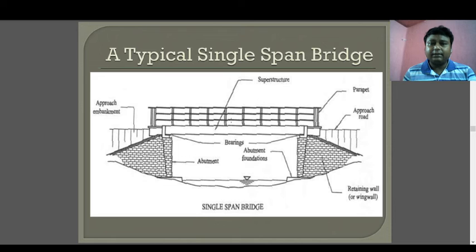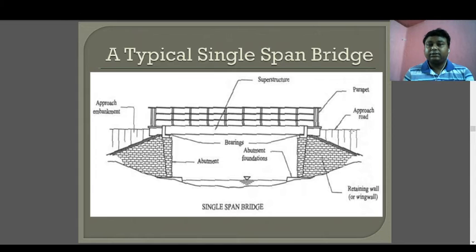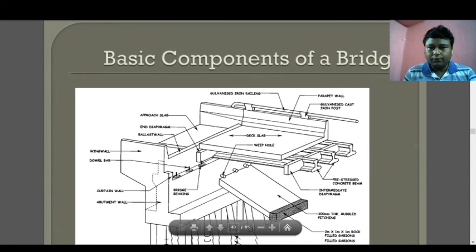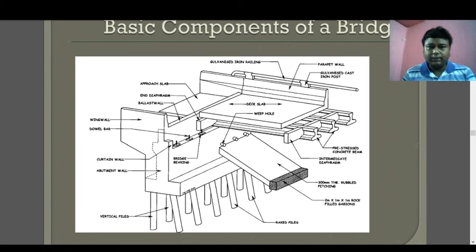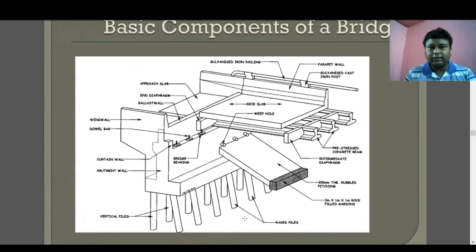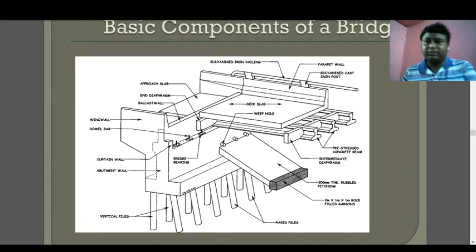In a typical single-span simple bridge, the superstructure is visible at the top, there is a parapet at the end of the superstructure, a bearing portion, and the abutment portion. A retaining wall supports this abutment and the bridge. In a typical bridge diagram, the main components include vertical piles from the superstructure, raked piles, abutment wall, curtain wall, tower wall, and wing wall.